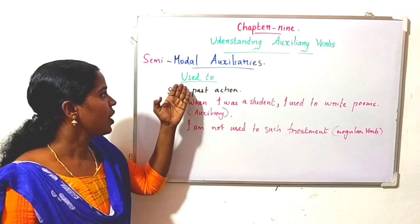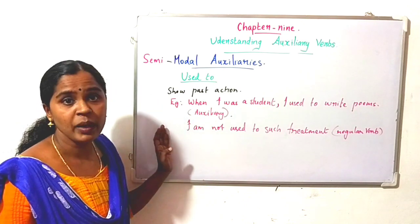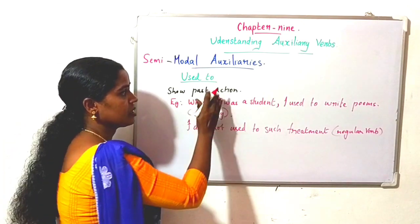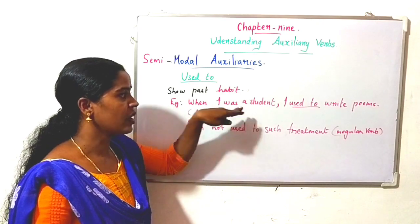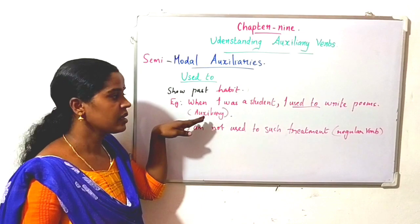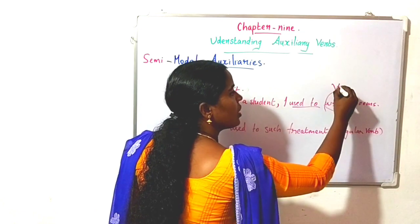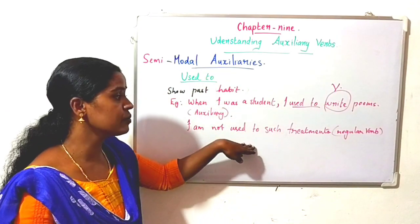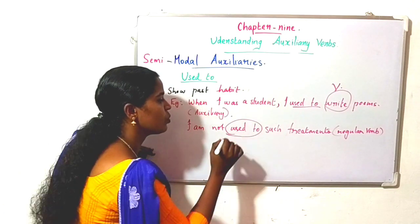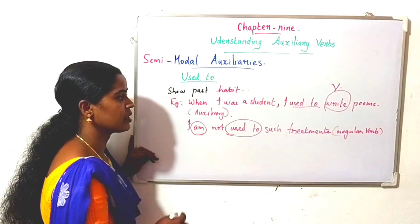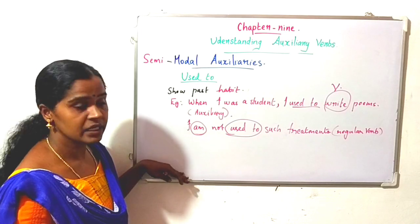The last semi-modal auxiliary is used to. It shows past habit or past action. When used as an auxiliary, another verb follows it: 'When I was a student, I used to write poems' — here used to is an auxiliary because another verb follows. 'I am not used to such treatments' — here it is used as a regular verb because no other verb follows it and another auxiliary appears. In this way we can differentiate used to as auxiliary versus regular verb.